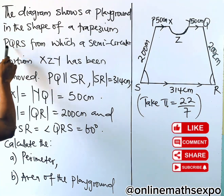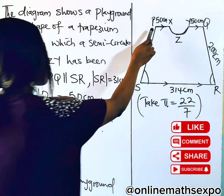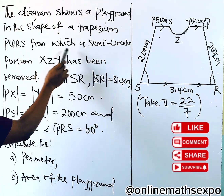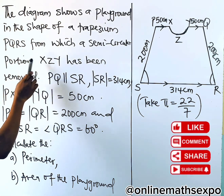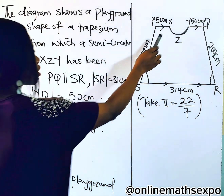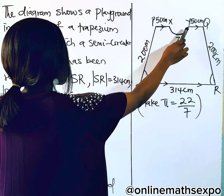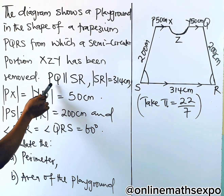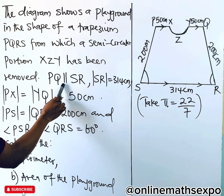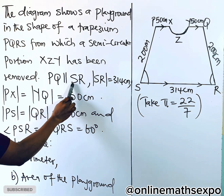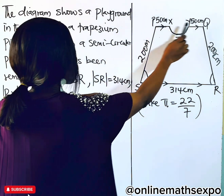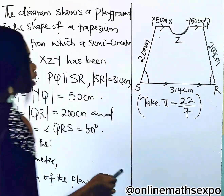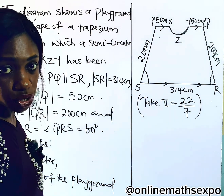So we are asked about trapezoid P, Q, R, S. This is P, this is Q, this is R, this is S. From which a semi-circular portion X, Z, Y was removed. And we are told PQ — this means parallel — so PQ is parallel to SR. The arrow shows you the parallel, and that is why we call it a trapezoid.